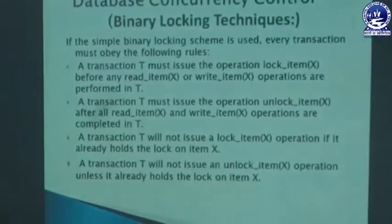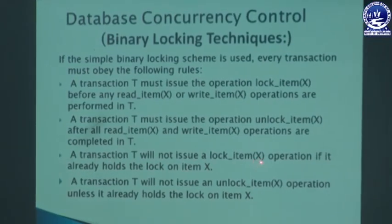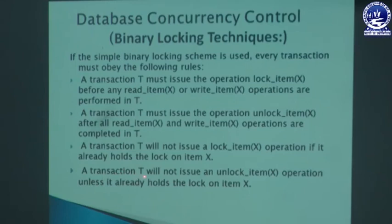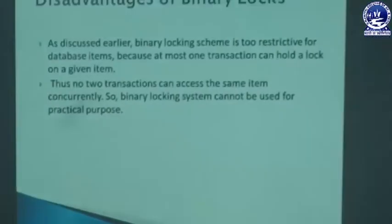Rule 3 — a transaction T will not issue lock(X) if another transaction already holds a lock on item X; T must wait until that item is unlocked. Rule 4 — a transaction T will not issue unlock(X) unless it already holds a lock on item X.